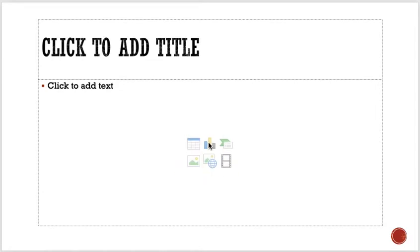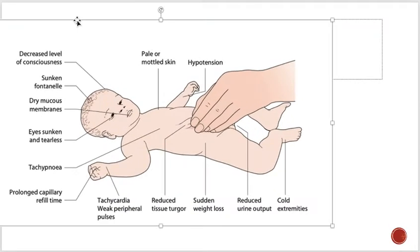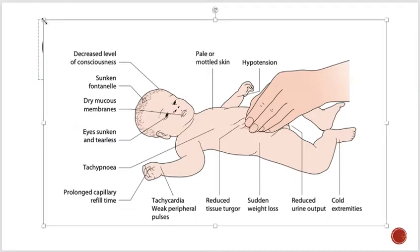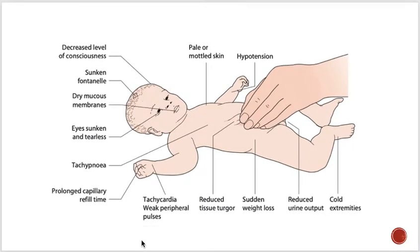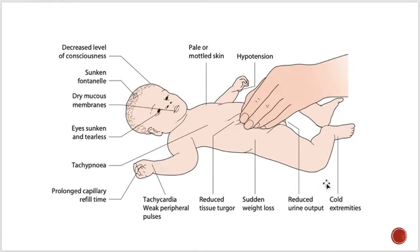For clinical hydration status, we look for decreased level of consciousness, sunken fontanelle, dry mucous membranes, sunken and tearless eyes, tachypnea, prolonged capillary filling time, tachycardia with weak peripheral pulses, reduced tissue turgor, sudden weight loss, reduced urinary output, cold extremities, hypotension, and pale or mottled skin. These signs in babies indicate the hydration status is not good.